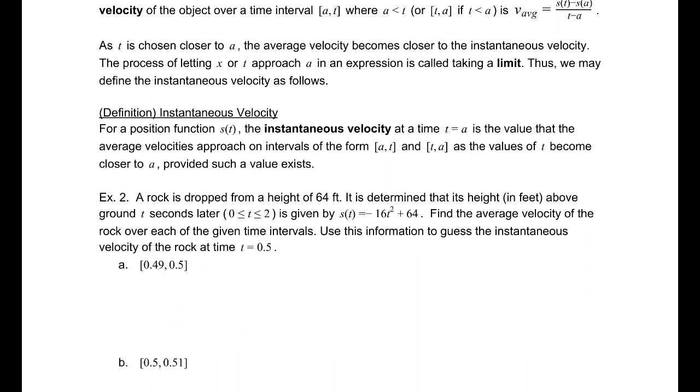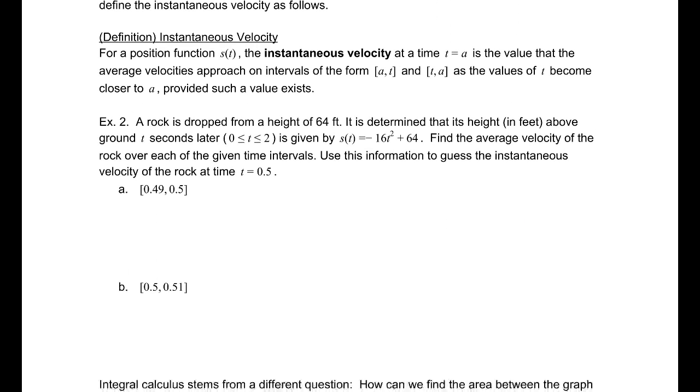In example two, a rock is dropped from a height of 64 feet. It's determined that its height in feet above the ground t seconds later, from 0 to t, is given by s(t) = -16t² + 64. That is a very common physics formula. When something's dropped, it has no initial velocity. We want to find the average velocity of this rock over the given time intervals, and then use the information to guess the instantaneous velocity at time t = 0.5. If you notice, the first interval is coming from the left prior to t = 0.5, and the other is looking at the 0.01 seconds past that.